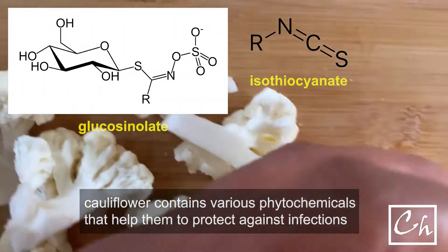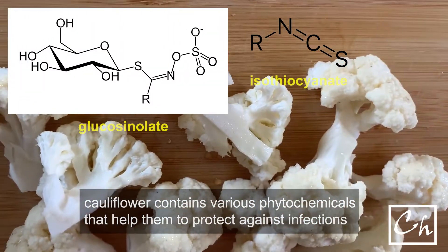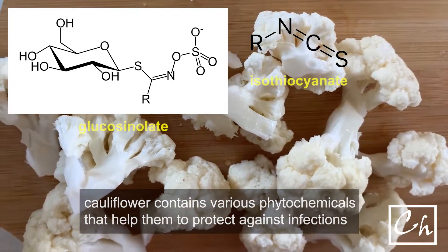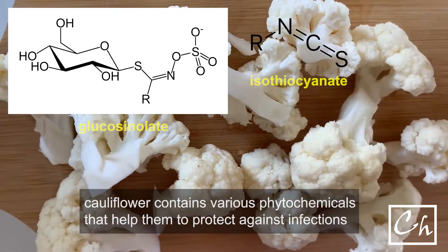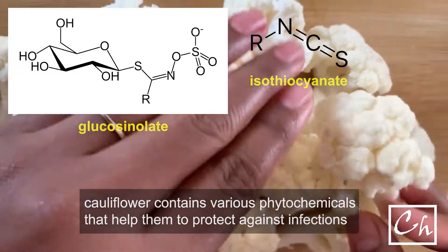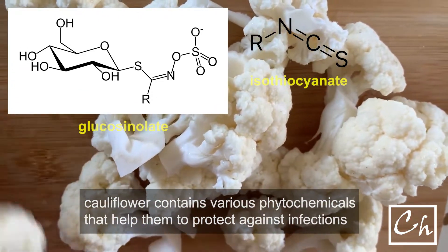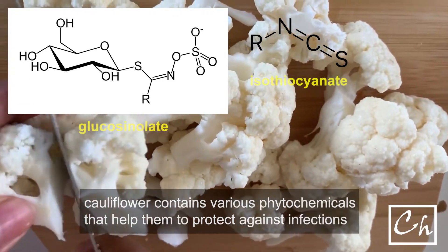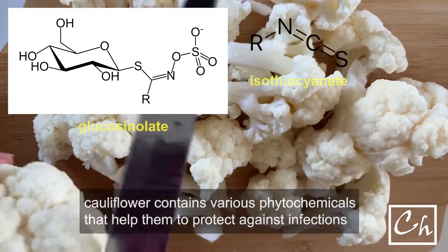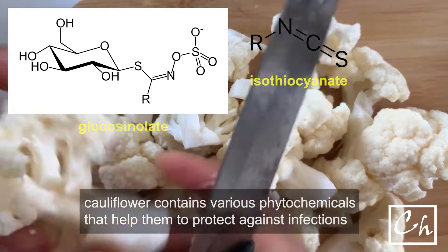Cauliflower contains various phytochemicals like glucosinolate and isothiocyanate. Those are sulfur compounds. This helps the plant to fight against various kinds of infection like yeast or bacterial infections. So these are very helpful for the plant's survival.